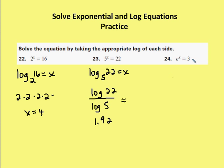And finally, I have e to the x is equal to 3. I can rewrite that as natural log of 3 is equal to x. Remember, this is the base of e — e to the x is equal to 3. In my calculator, I type in natural log of 3. That gives me my answer for x, which is approximately 1.10.